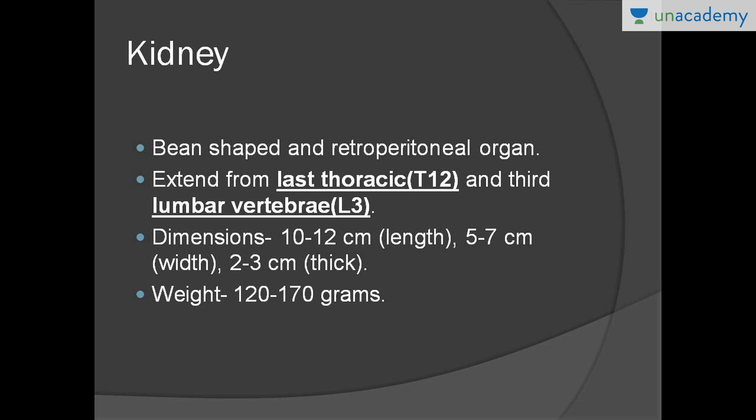The kidney is basically the site where urine is formed from blood. It is a bean-shaped organ and a retroperitoneal organ — this is very important. Retroperitoneal means it is covered by the peritoneal covering only on its anterior (ventral) side and not on the dorsal side.